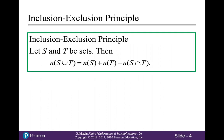And that brings us to the inclusion-exclusion principle. Let S and T be sets. Then the number of elements in S union T is equal to the number of elements in S plus the number of elements in T minus the number of elements in the intersection of S and T. I'll talk a little bit in the examples about why that is.